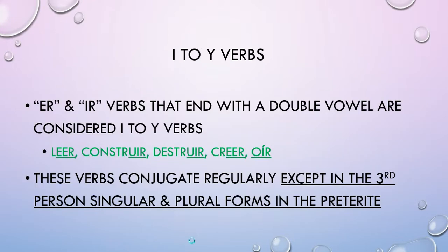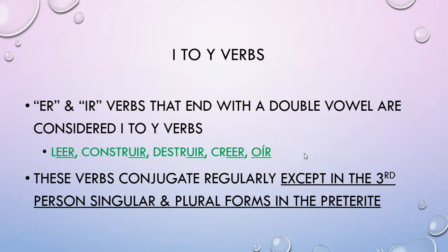Now let's talk about I to Y verbs. These are ER and IR verbs that end in a double vowel — meaning a vowel appears right before the ER or IR ending. For example, LEER has an E before the ER ending, and CONSTRUIR has a U before the IR ending. These verbs conjugate regularly in the preterite except in third person singular and plural, which are the él and ellos/ellas forms.